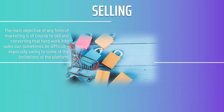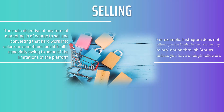Selling: the main objective of any form of marketing is of course to sell, and converting that hard work into sales can sometimes be difficult, especially owing to some of the limitations of the platform. For example, Instagram does not allow you to include the swipe-up-to-buy option through stories unless you have enough followers. You can opt to use Snapchat instead, as that does include a link, but that reaches a much smaller audience and a younger demographic.